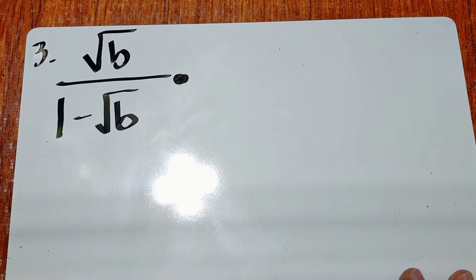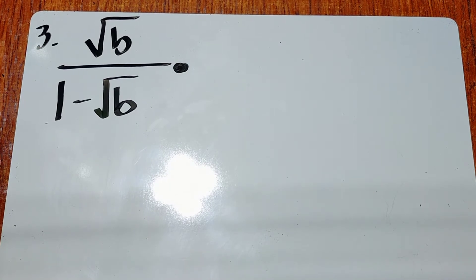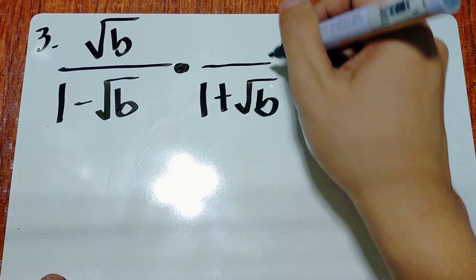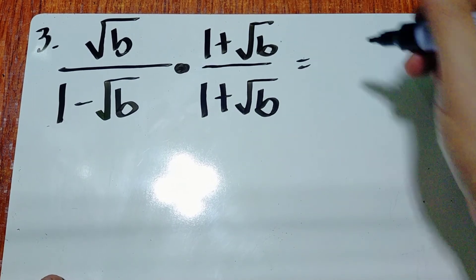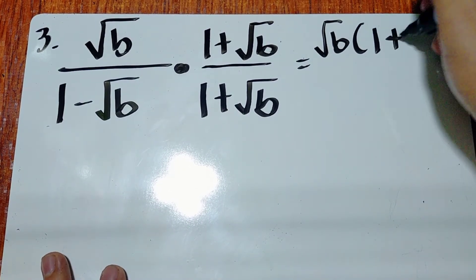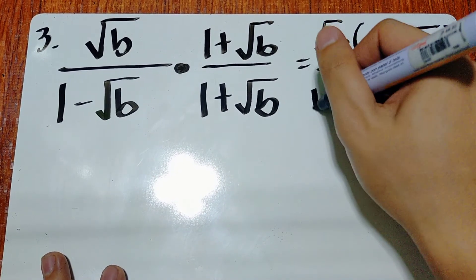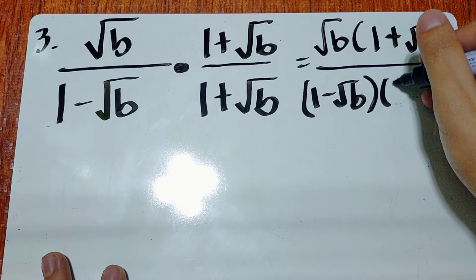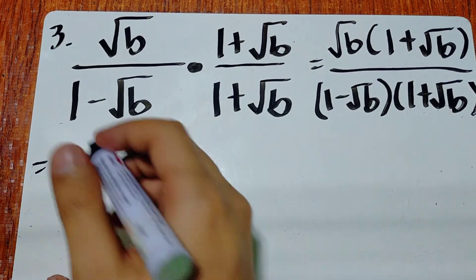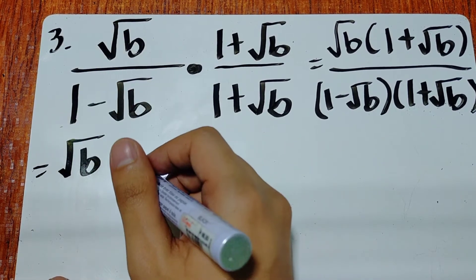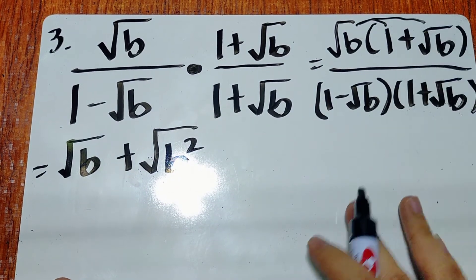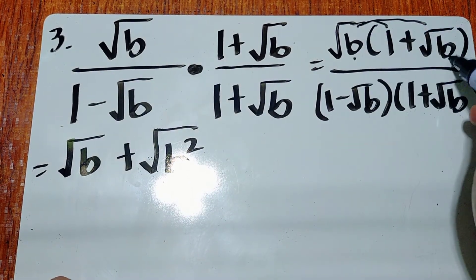Another example: square root of b over 1 minus square root of b. Again, we use its conjugate — just change the sign to get 1 plus square root of b. Multiply: square root of b times the quantity (1 plus square root of b) over 1 minus square root of b times (1 plus square root of b). Distributing the numerator gives square root of b plus square root of b squared. That becomes square root of b plus b, because b squared under a radical cancels the radical.